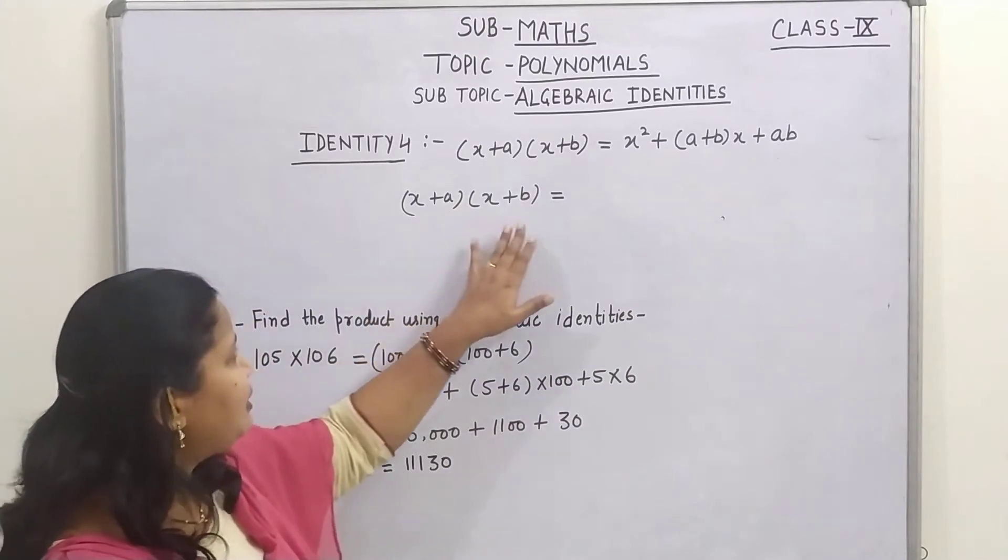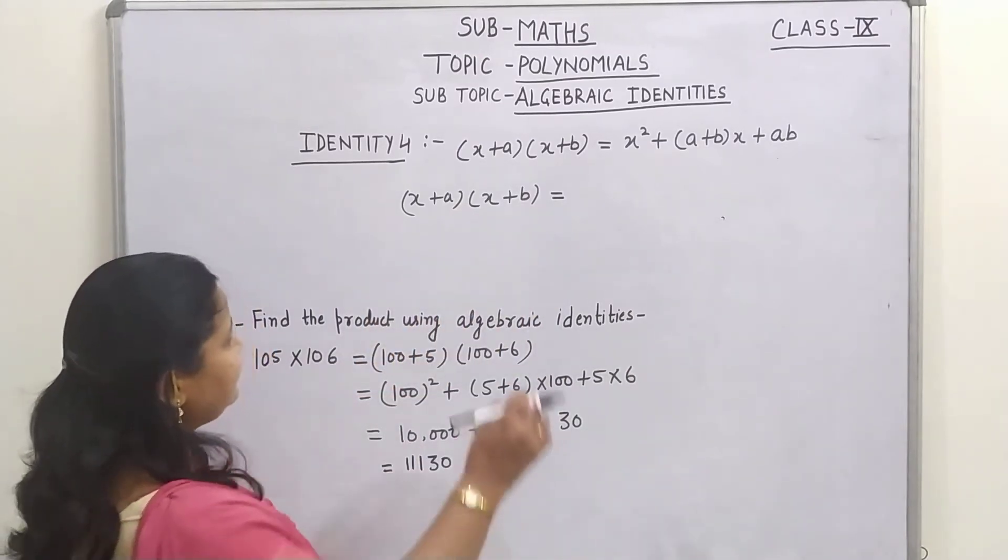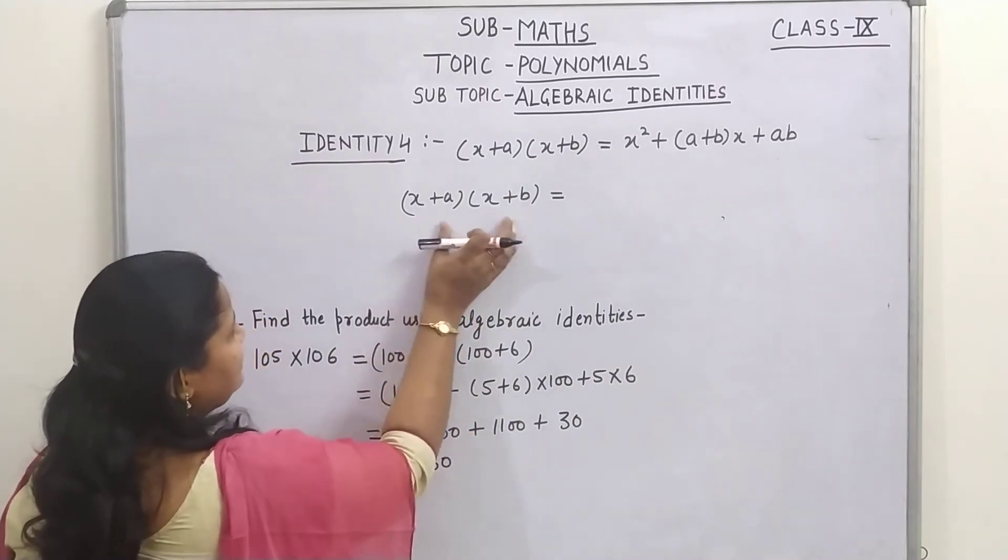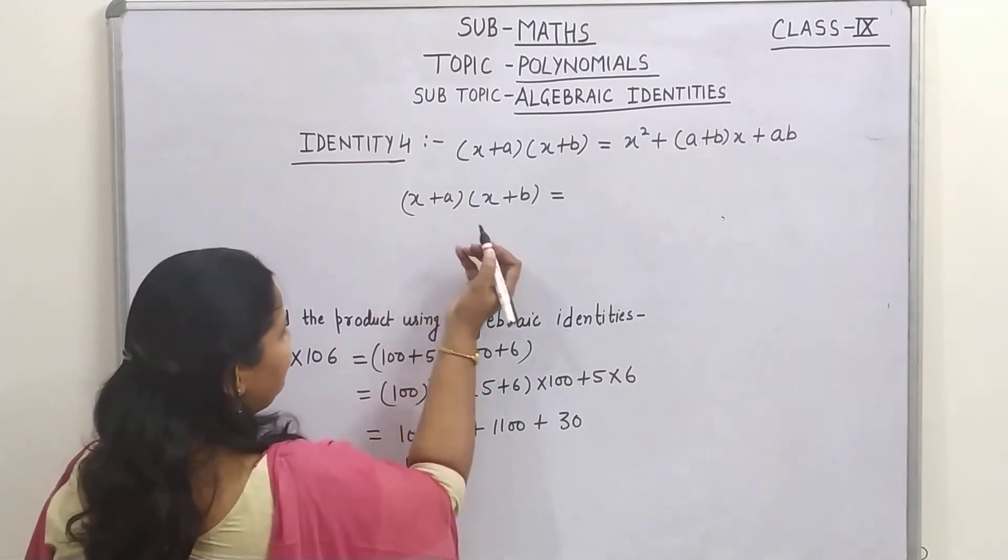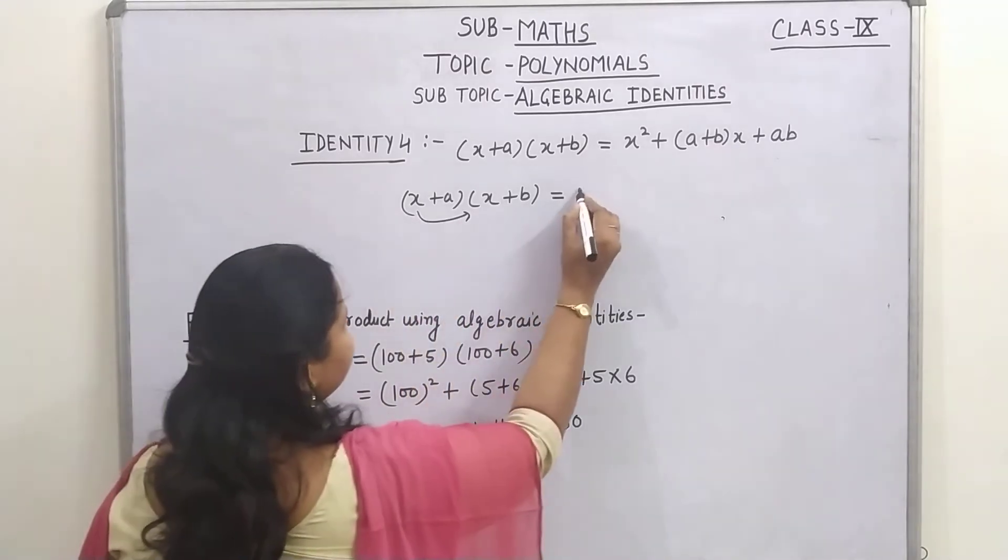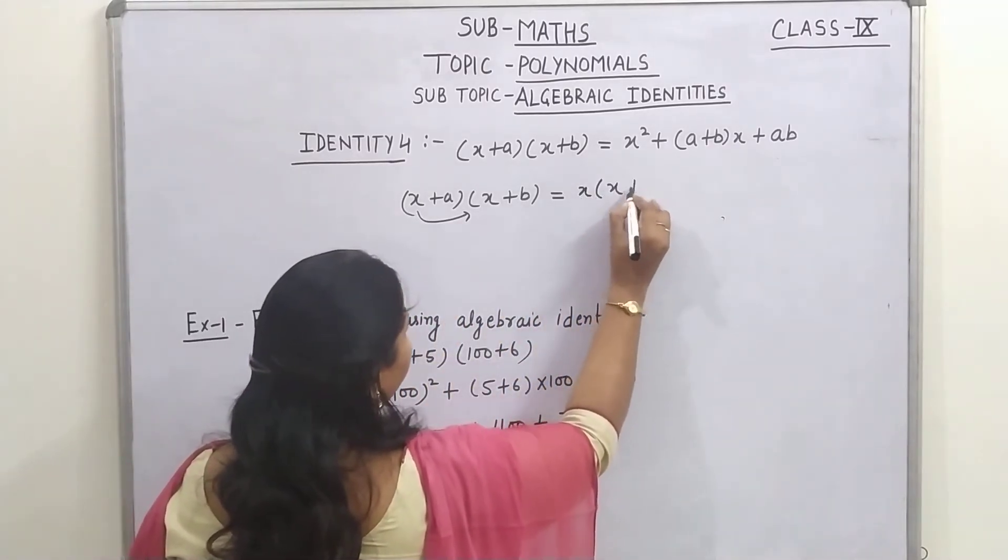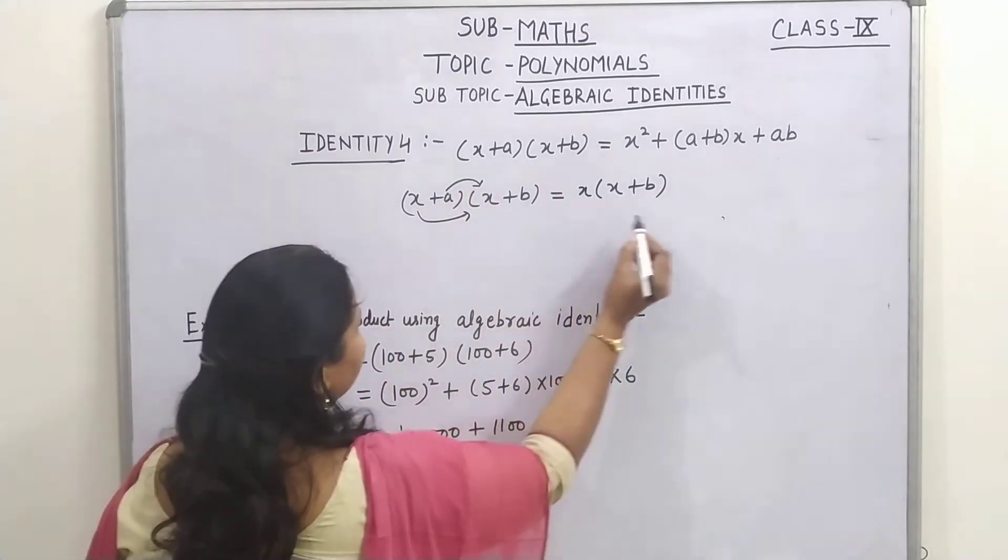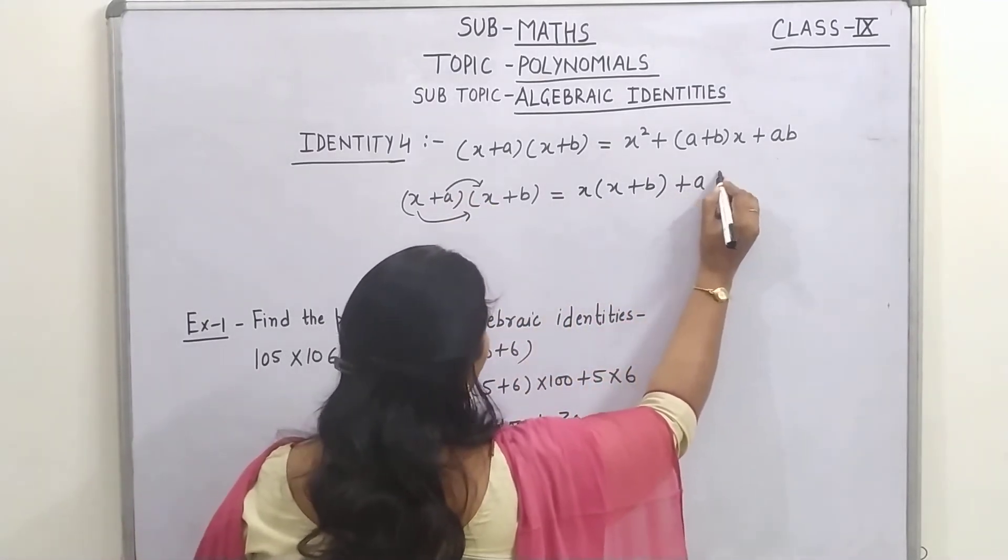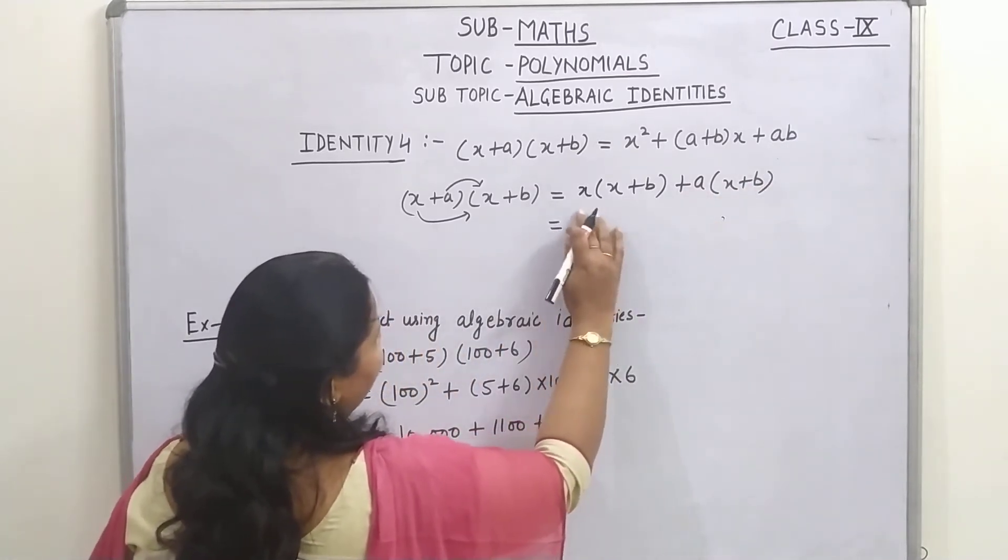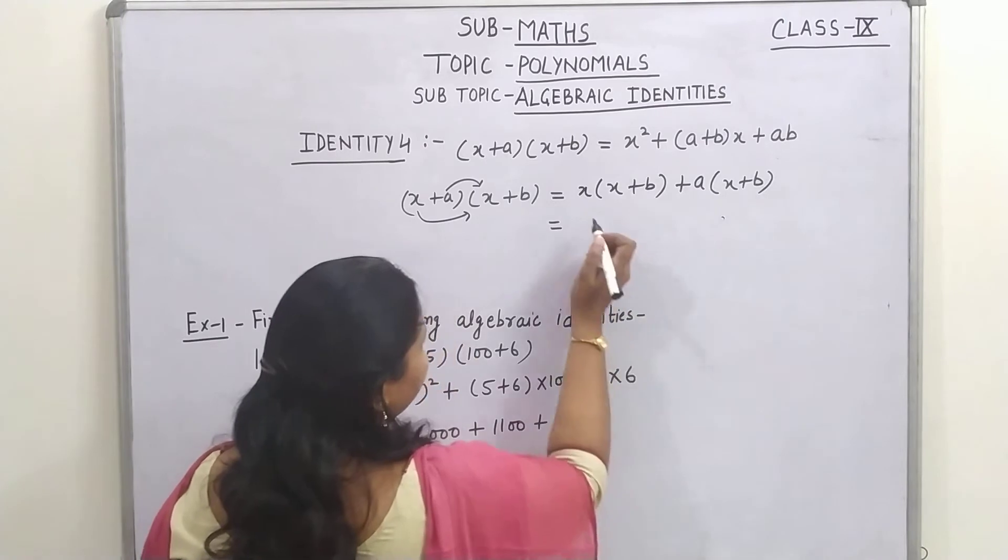So children, first of all about the derivation of this identity, here there are two brackets x plus a, x plus b. Now multiply these both the brackets, as we have done earlier, now multiply this x by this bracket, so x multiply by x plus b and multiply this a also by this bracket, so plus a multiply x plus b.